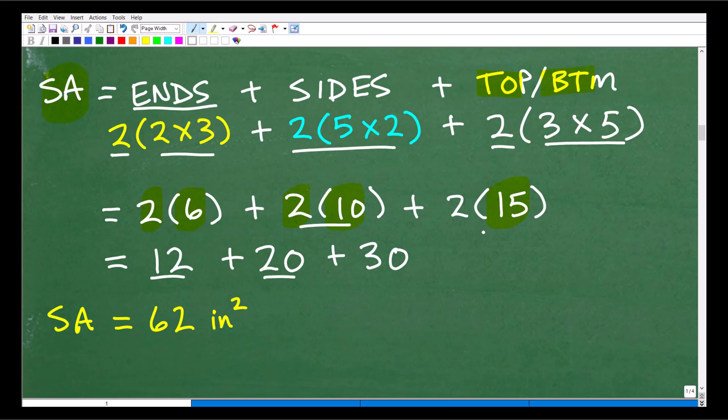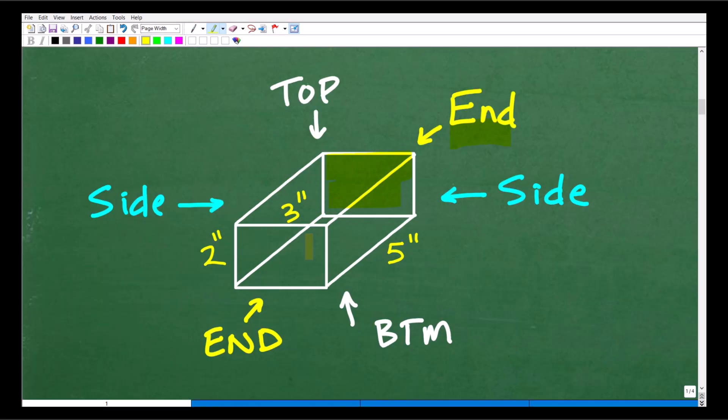So, let's go ahead and put this all together. So, here we have 12. This would be 20. And 2 times 15 is 30. And all together, that's 62. But remember, at the end of all those calculations, we are dealing with inches. And we are dealing with, of course, area or surface area. So, 62 inches squared.